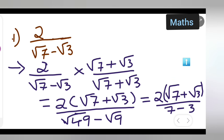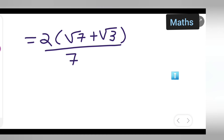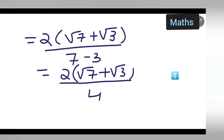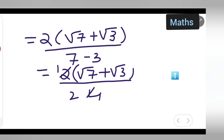The denominator is root 7 squared minus root 3 squared, which gives 7 minus 3 upon 7 minus 3. So you get 2 into (root 7 plus root 3) over 4. Then you cancel: 2 goes into 4 twice, so 2 over 4 simplifies to 1 over 2.